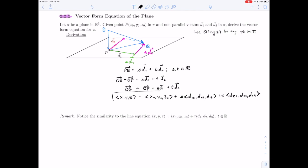So this is the vector form equation of a plane given that we know a point (x0, y0, z0) and two vectors in the plane.